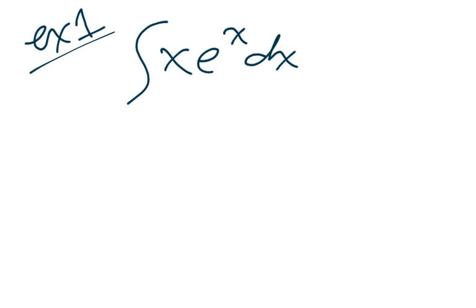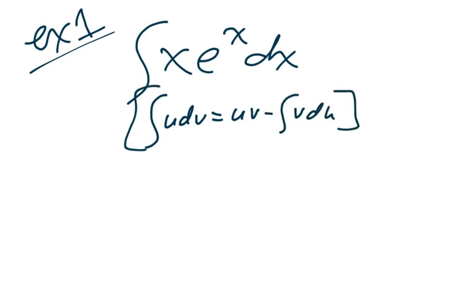We don't have a way of doing this. If this were e to the x squared, then this would be a u substitution thing, right? u equals x squared, du equals 2x. But that's not what it is. So we do not have a technique currently of doing this integral. So I need to rewrite this in a way. I'm going to recall the format of the integration by parts. Integral of u dv equals uv minus integral of v du. That's what we're looking at.